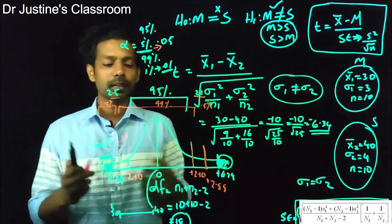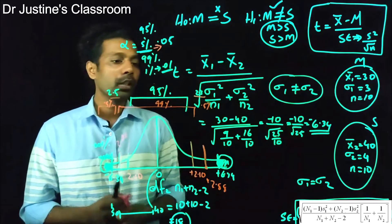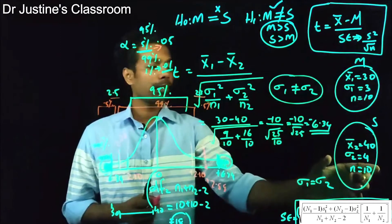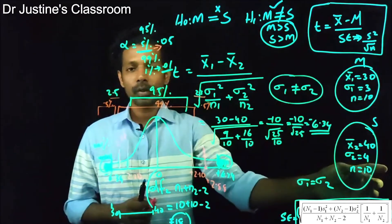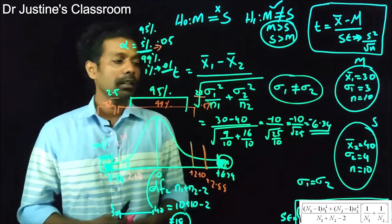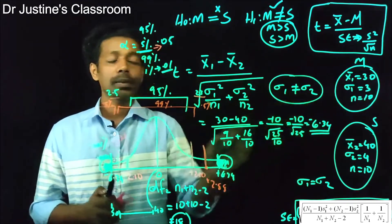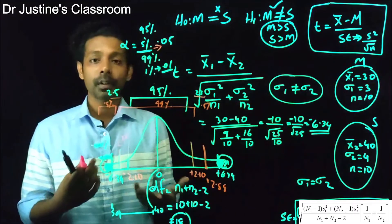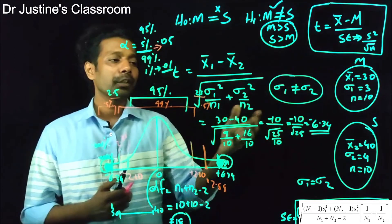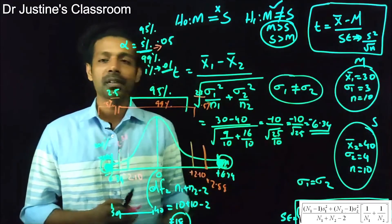The common assumptions of the independent sample t-test are: first, normality — both group one and group two data must be normally distributed. If either group violates normality, you cannot proceed with the independent sample t-test. Second, homogeneity of variance — the standard deviations of both groups should be approximately equal.